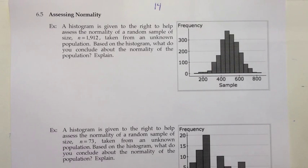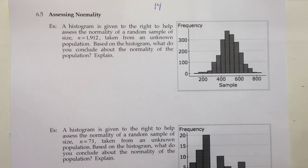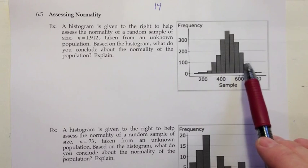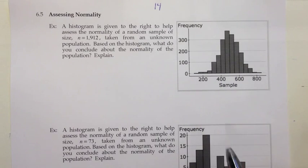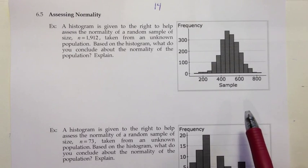So let's look at a couple examples. In this first one, a histogram is given to help us assess the normality of a random sample of size 1,912 taken from an unknown population. Based on the histogram, what do we conclude about the normality of that population? When I look at this histogram, it seems like it is roughly bell-shaped — not perfectly bell-shaped, but roughly. We don't have perfect symmetry and maybe our tails aren't exactly the same length, but we have to remember this is just a random sample, and in a random sample there's some random variation.